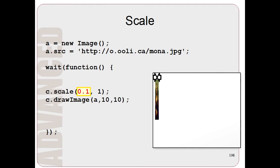Notice that we're only changing the first number, so the image only gets shrunk horizontally. If we wanted to shrink the image vertically, we would change the second number as well.